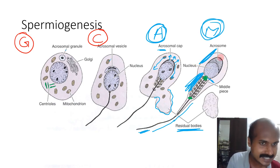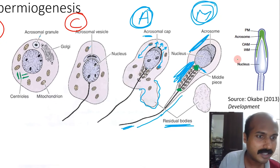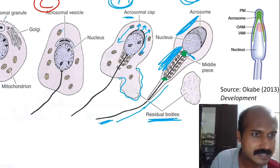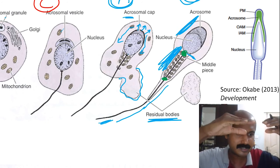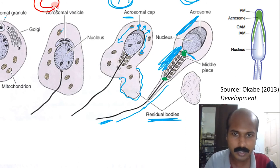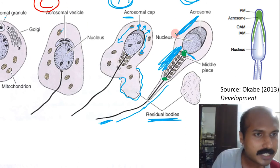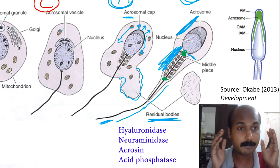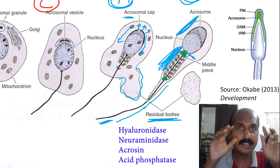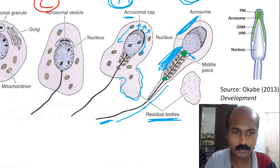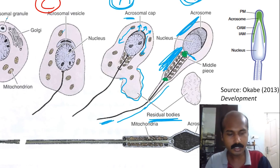In a diagram from the journal Development by Okabe, you can see how the acrosome caps the spear-head-like nucleus — two-thirds of which is enveloped by the acrosome — surrounded by the plasma membrane and a thin film of cytoplasm. The acrosome contains key enzymes including hyaluronidase and acrosin, which help penetrate the barriers during fertilization.